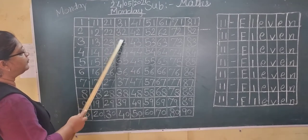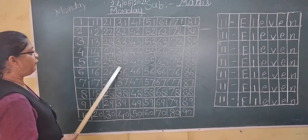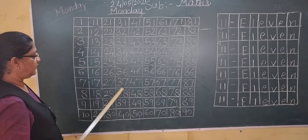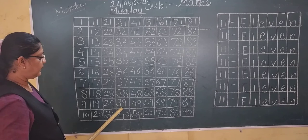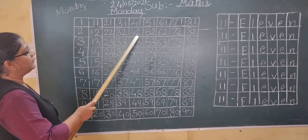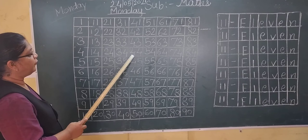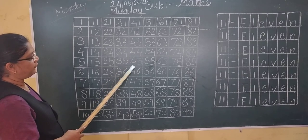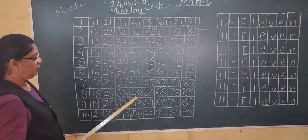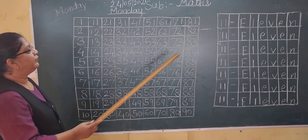Thirty-two, thirty-three, thirty-four, thirty-six, thirty-seven, thirty-eight, thirty-nine, forty, forty-five, forty-six, forty-seven, forty-eight, forty-nine, fifty.